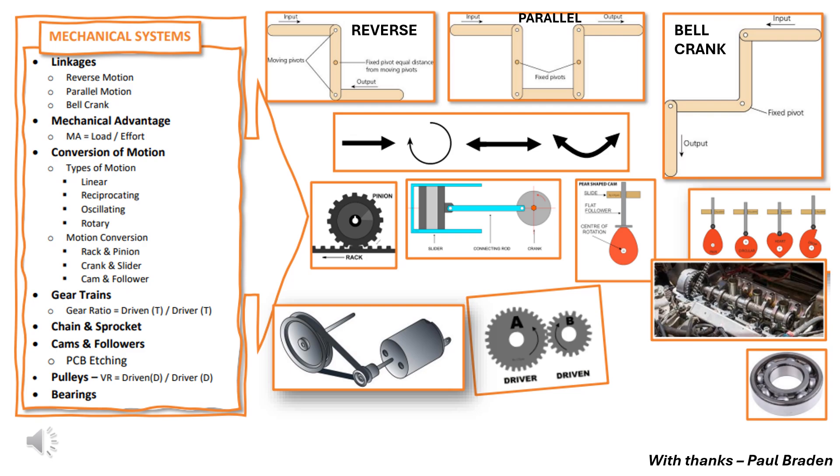The final one we have is the bell crank. This linkage has one fixed pivot and two moving pivots. The output is at a 90 degree angle so make sure you remember that. In other words it changes a horizontal movement to a vertical movement or vice versa which you can see in this diagram. The horizontal movement is actually causing a downward motion.